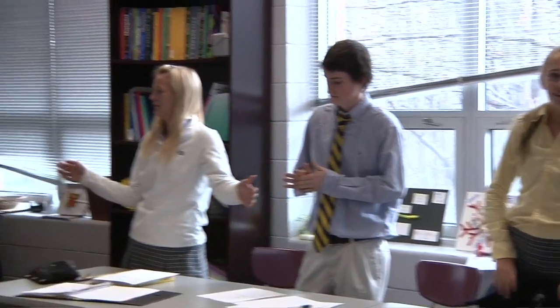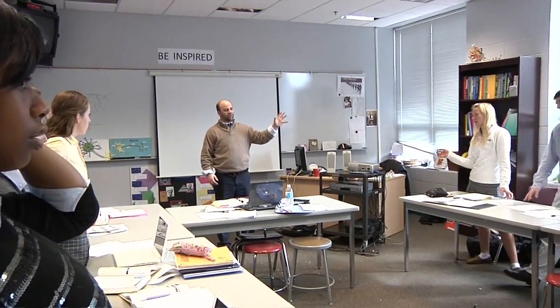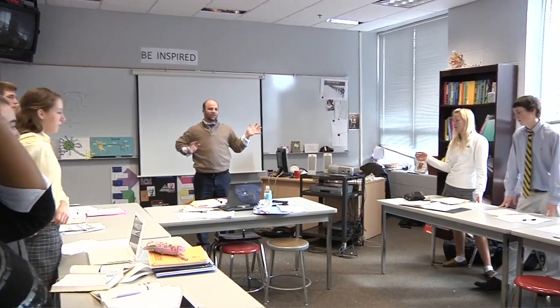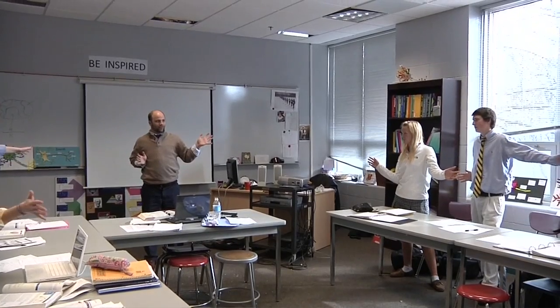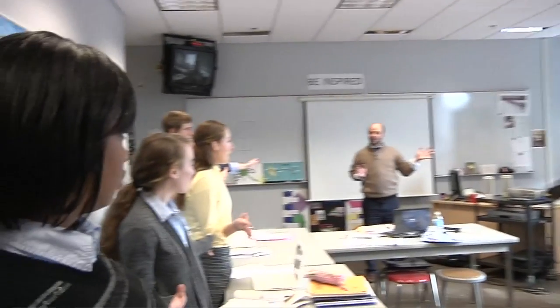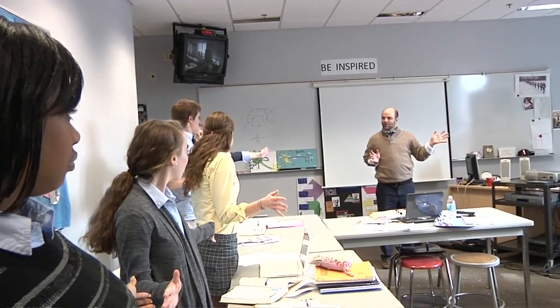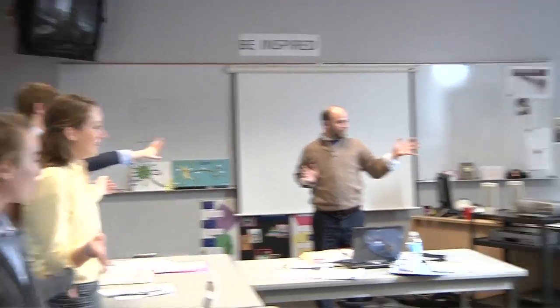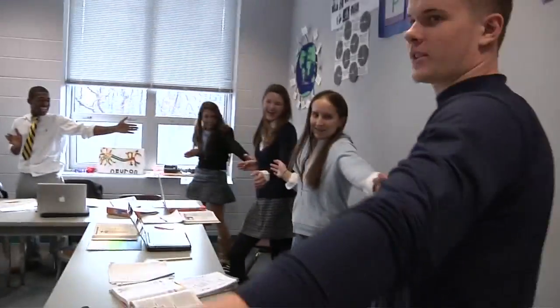Ascending. Ascending neurons, which are afferent. Then when it goes back out to my hand, to my muscles, it's descending — efferent. So we're going to go faster now. Come on, everybody get into it. Faster. Who wants to start? Go ahead.